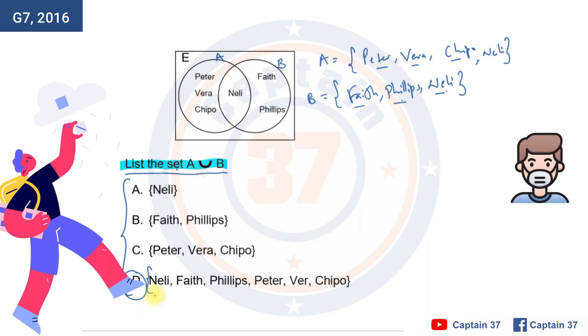Why? Because it is in D that you have Nelly, there's Nelly there, and there's Nelly here. There's Nelly here, and there's Nelly. There's Faith, there's Faith, there's Phillips, there's Phillips, there's Peter, there's Peter, there's Vera, there's Vera, and there is Chippo there.